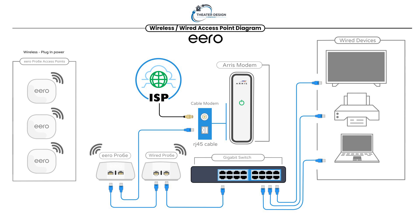At that point you can walk around the home and place your Pro 6Es in each room with plug-in power, adopt those to the Eero system, and you have internet. In a second scenario, say you have an office, a remote area, a barn, or a shed that happens to have a Cat6 or Cat5e run from where your Pro 6E resides — you can now wire a second Pro 6E and run it out to a gigabit switch.